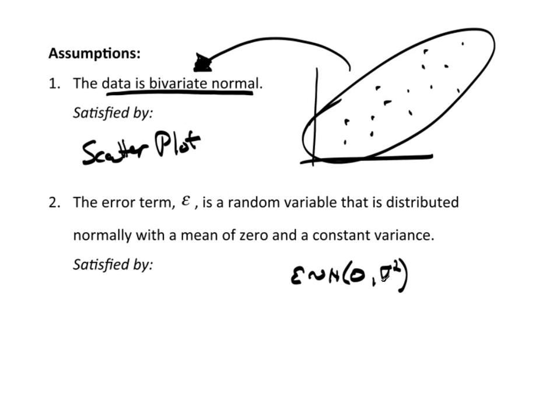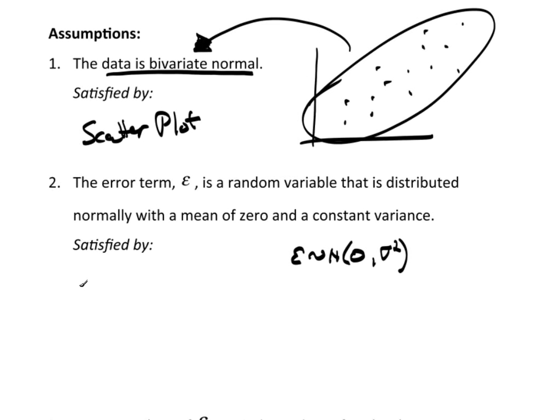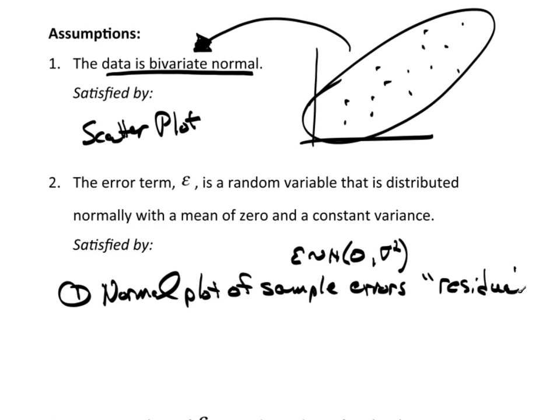But if you're going to do prediction intervals, a confidence interval for predicted value, then this constant variance is extremely important. Now, we satisfy these by, number one, do a normal plot of the sample errors. And the sample errors are referred to as residuals. That will tell me if the errors are reasonably normal.